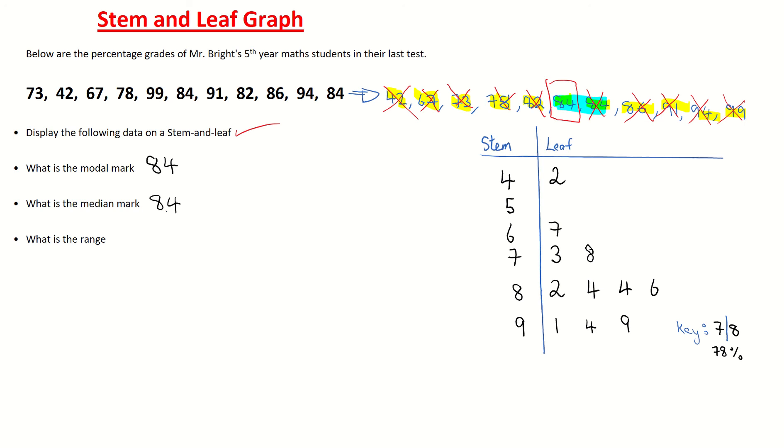If I was using my stem and leaf to find 84 rather than the list of numbers, I would do the same thing. I would cross off the first number with the last number, the second number with the second last number, the third number with the third last number, the fourth with the fourth last, the fifth with the fifth last. And lo and behold you are left with just this 4 on its own which stands for 84.